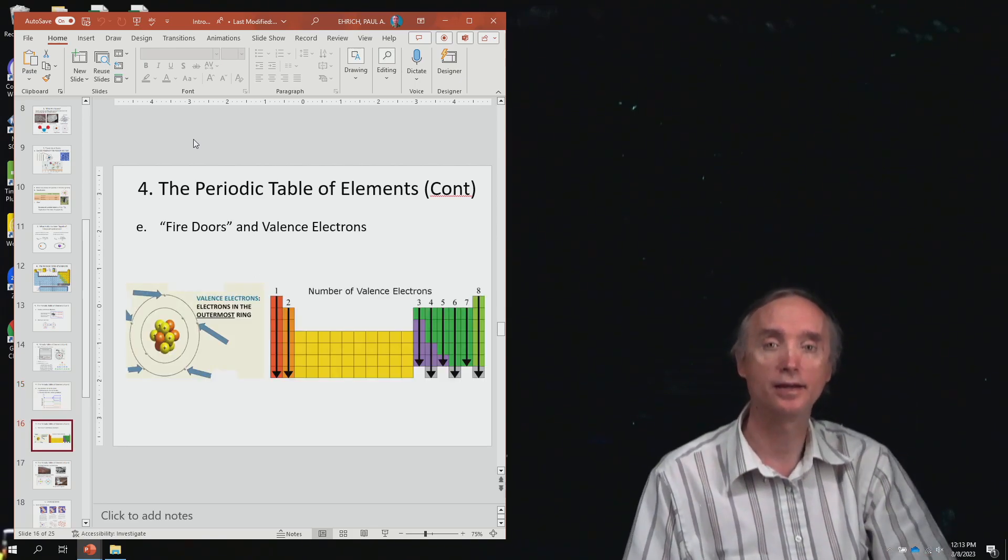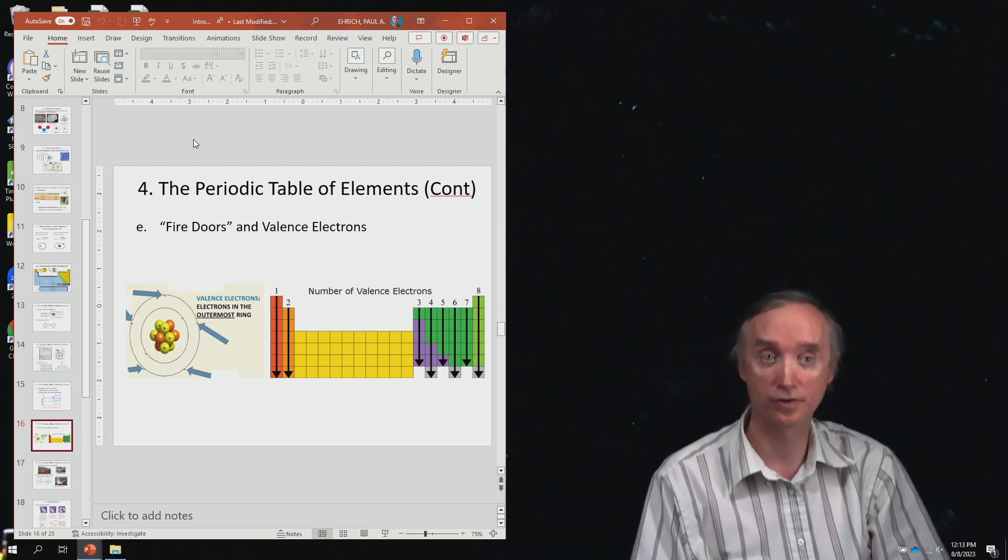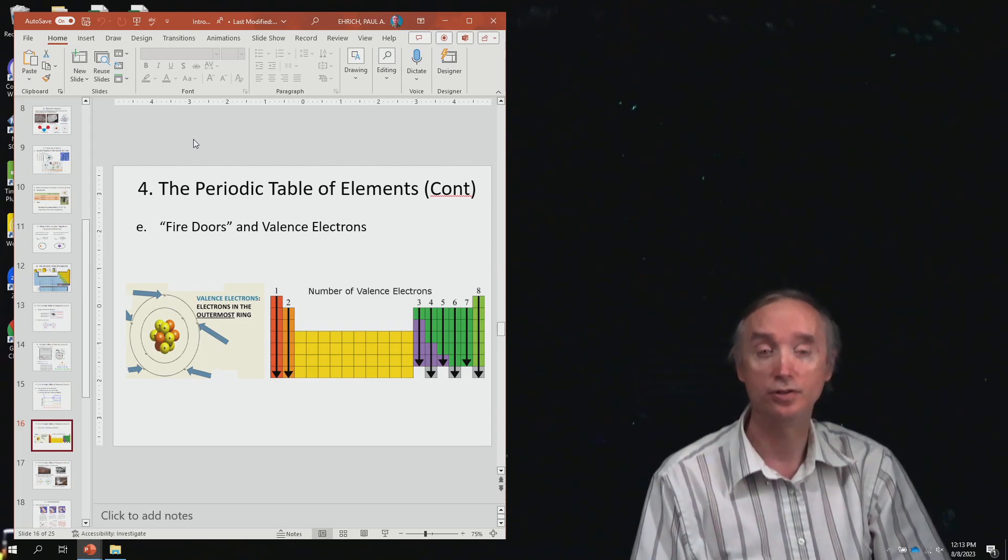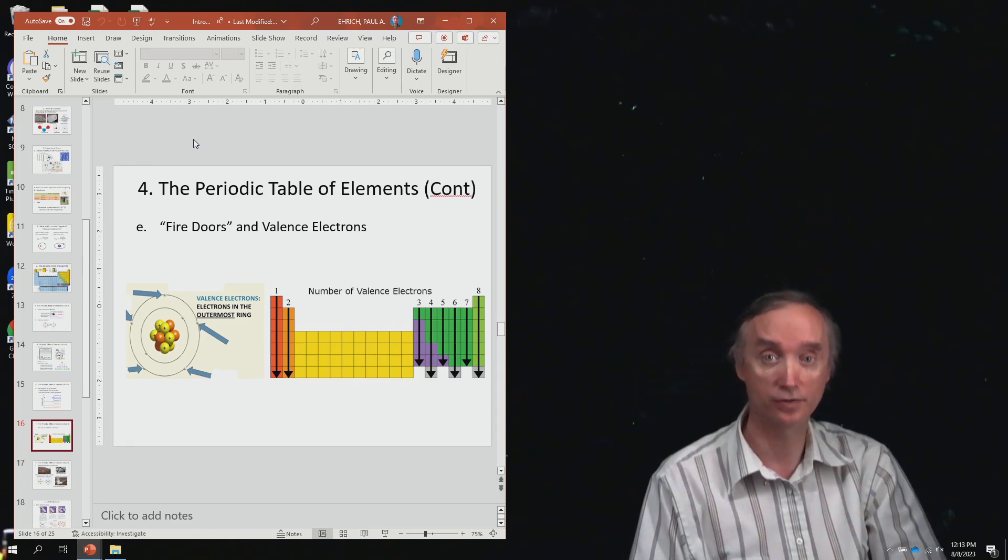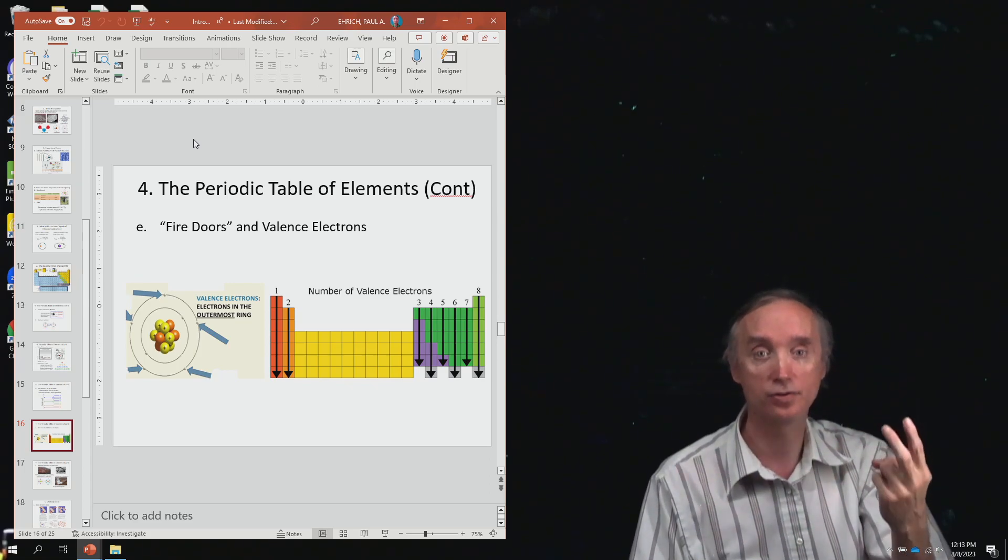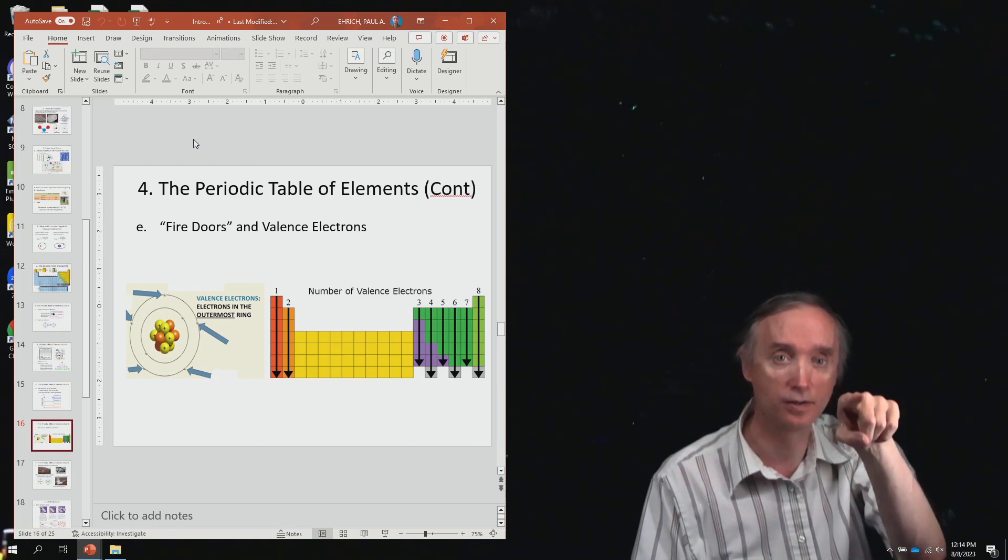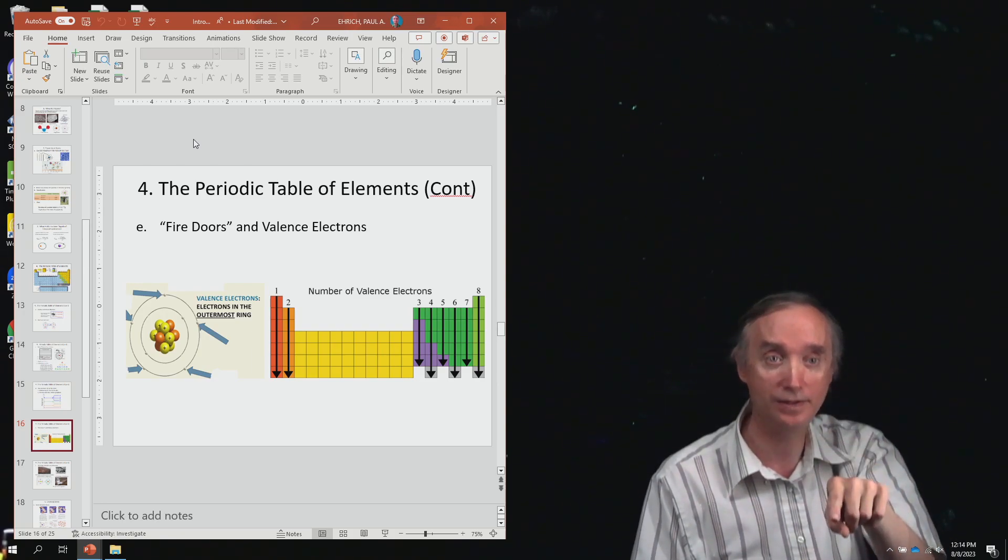And then we had the outer electrons. So the outer electrons are called the valence electrons. And in order to know how many outer electrons an element has, you look at the column it's in. So if it's in column number one, which is over on this side over here, that means it has one outer electron. If it's in column two, it's got two outer electrons. And then notice that when you add all of those columns together, you get the number eight, which is the magic number in chemistry.